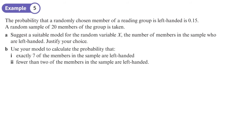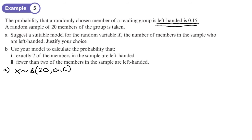Now let's look at this question: the probability that a randomly chosen member of a reading group is left-handed is 0.15. A random sample of 20 members is taken. Suggest a suitable model for the random variable X — the number of members who are left-handed — and justify your choice.